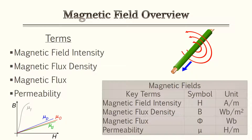For this lesson we're going to go over permeability and the key terms associated with it. The terms we're going to cover are magnetic field intensity, magnetic flux density, magnetic flux, and of course permeability. We'll give a brief overview of what each term means, and then we'll go ahead and tackle some practice problems.